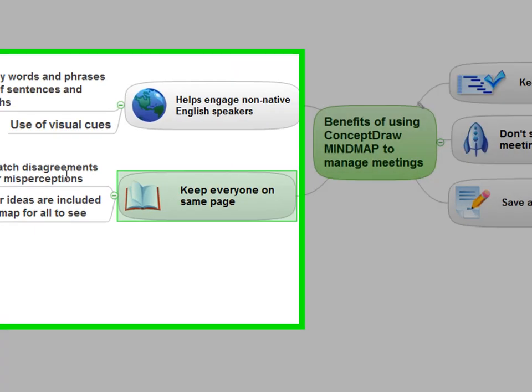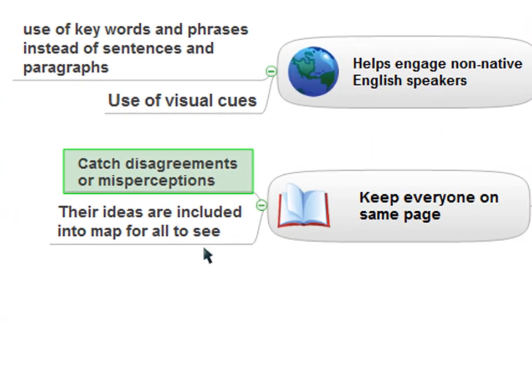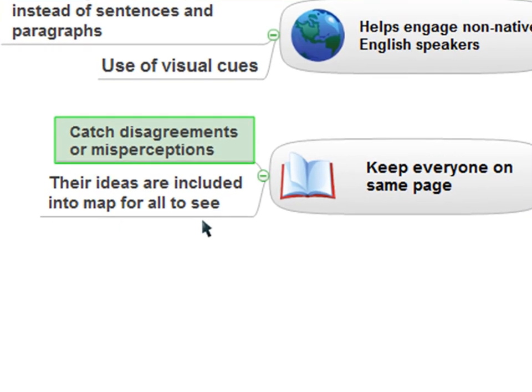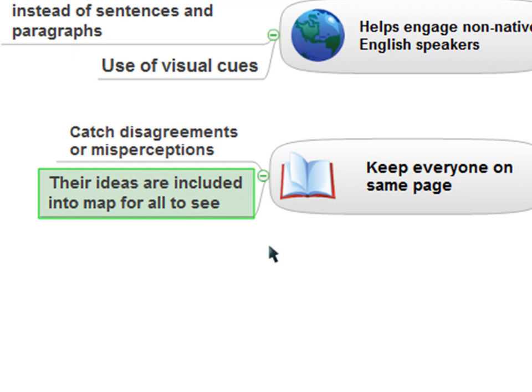Because everyone's on the same page, you're catching any disagreements or misperceptions. If there are misunderstandings about who's doing what, when they're going to do it, or what's involved, everybody can see that because you're typing in your notes in front of everyone to see. I should mention that I'm presuming you would project these maps onto a screen so everyone can see the map as it's being built. It also improves engagement because everyone's ideas are included in the map — if somebody in the back of the room suggests a better idea, you type it into the map and people feel like they're really part of the process. We've seen that it really does improve participation in meetings.